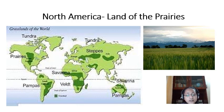The grasslands of the prairies were the home of Native Americans, often called Red Indians. They were the actual inhabitants of the continent. The prairies were home to other tribes also, like the Apache, the Crow, the Cree, and the Pawnee.